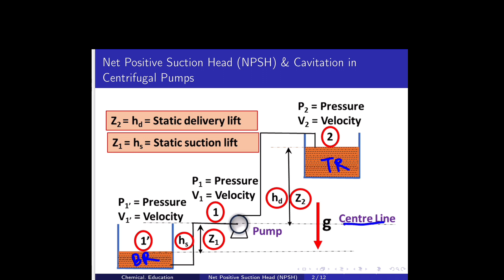The centerline indicated here serves as a reference line where the pump is positioned. The vertical distance from the centerline to the liquid surface of the bottom reservoir is denoted as Z1 or HS — that is also called static suction head lift. The vertical distance from the centerline to the top reservoir liquid surface is denoted as Z2, also HD, called static delivery lift.